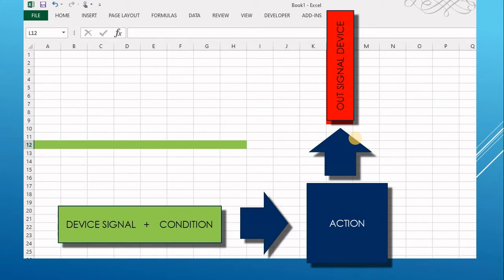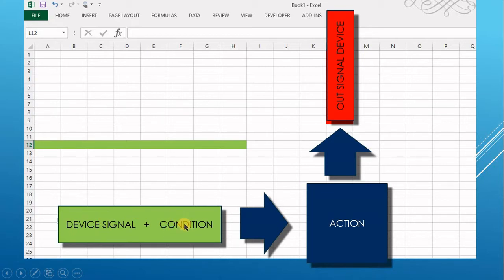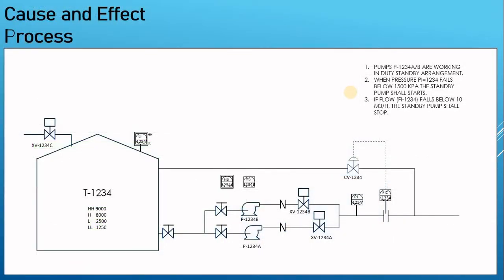Instead of giving it in wording or writing, we put it in an Excel sheet form. Each project and company has a specific way of expressing it, but in general what we need to do is show the device signal, add the condition, and specify what action to take on the output signal or device. Instead of talking too much, let's go into a real scenario. The process guys will give you a P&ID — let's assume this is our P&ID.